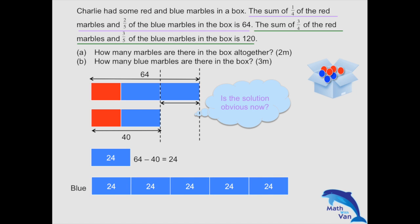And with that, we know that the total number of blue marbles are 5 blocks. So, 5 times 24, and that gives you your answer. You can do a check by substituting the answer back into the question. You should get the total for this two as 64 and 120.